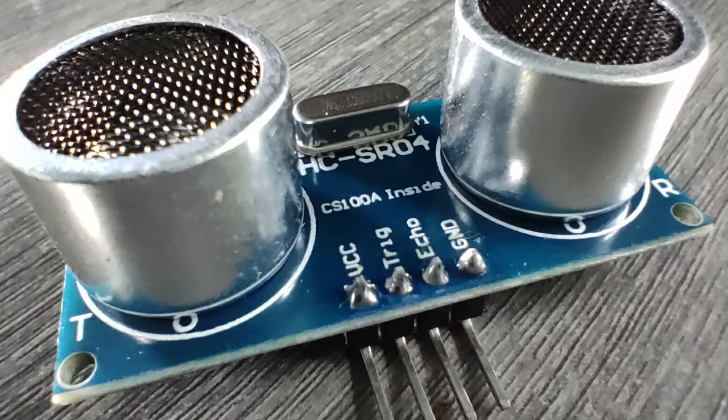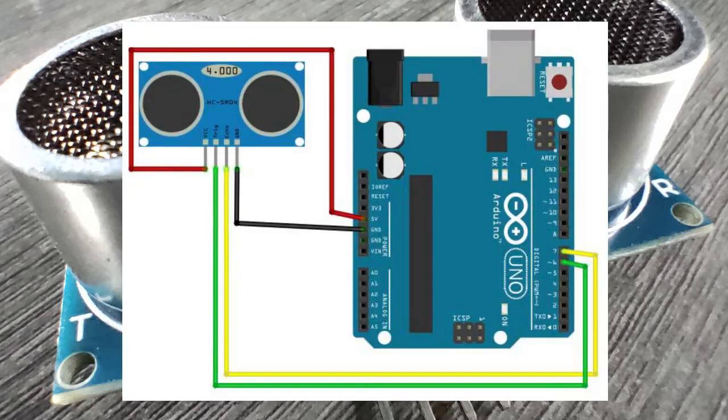The VCC pin connects to the 5V pin of the Arduino, and GND connects to the GND pin. You can attach the TRIG and ECHO pins to any digital pin except 0 and 1. To test our HC-SR04 ultrasonic sensor, we will make Project 22.